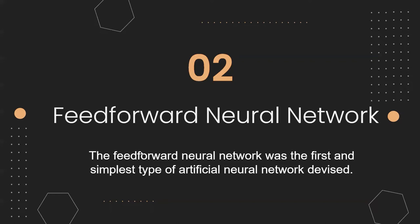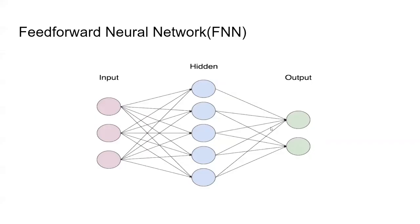Now let's see how the feedforward neural network, or FNN, works — it is the simplest type of neural network. In an FNN you have only one input layer, one output layer, and at least one hidden layer, though there can be many hidden layers. The number of neurons in each layer is determined by the nature of the task.